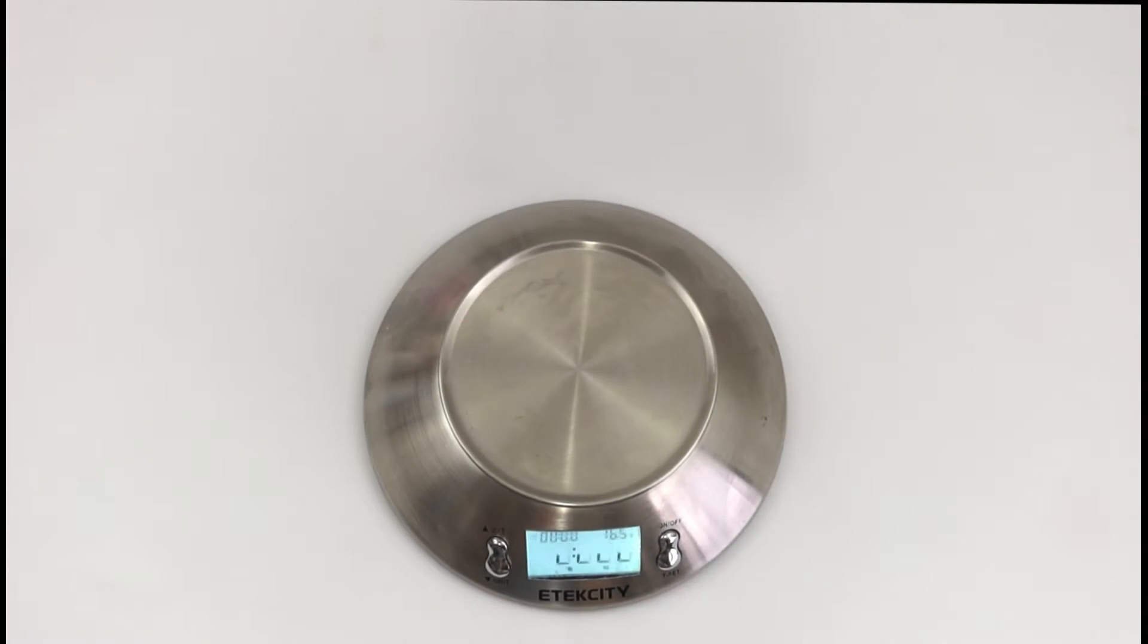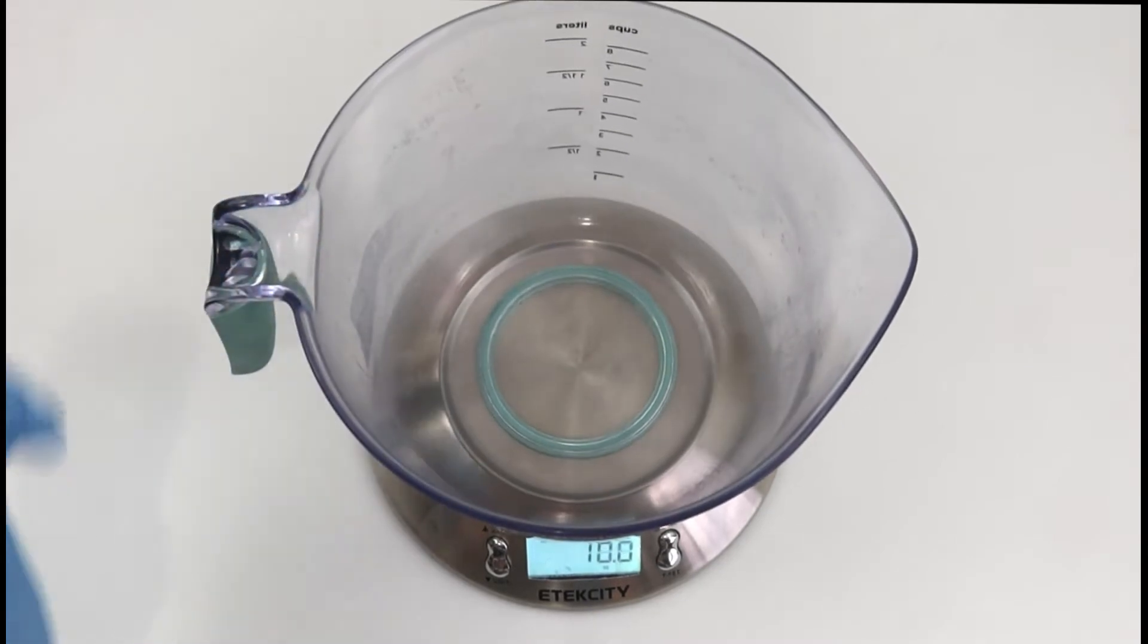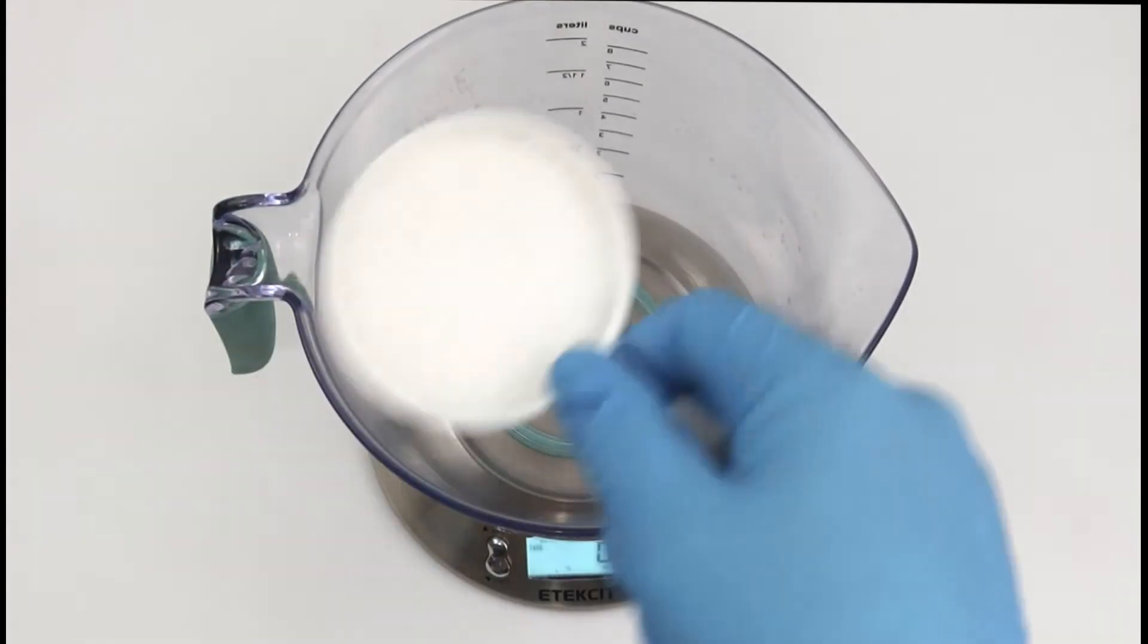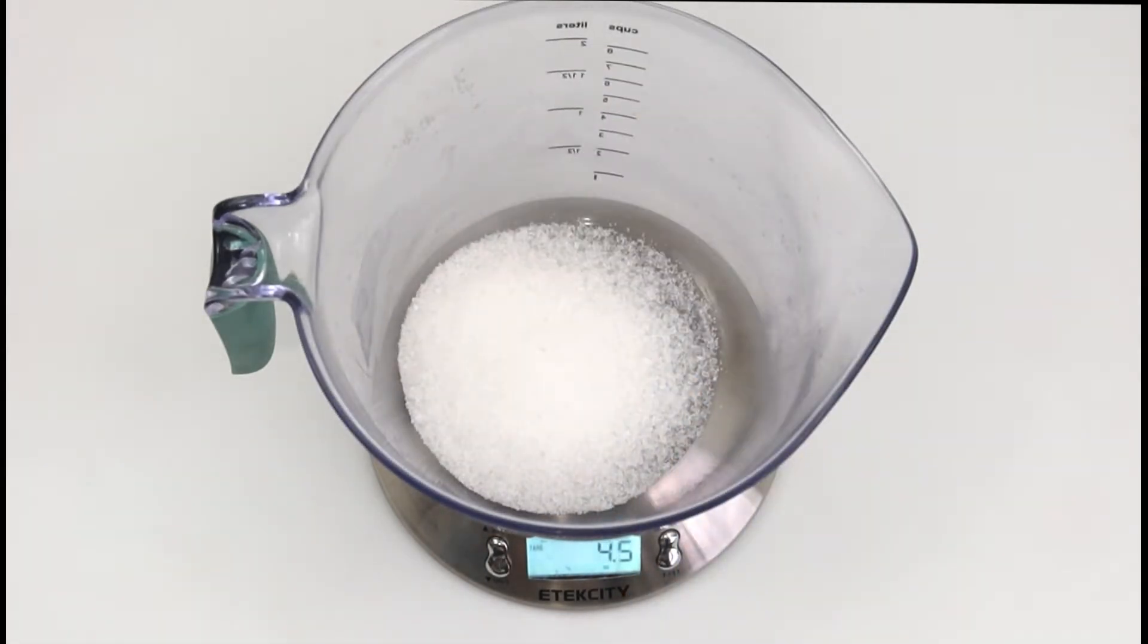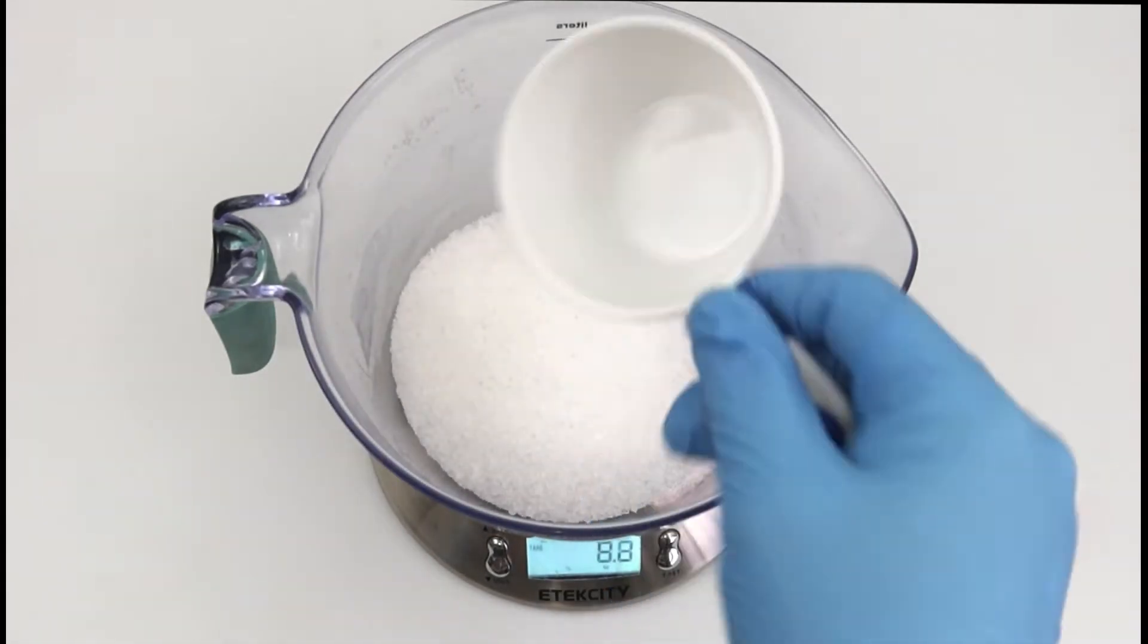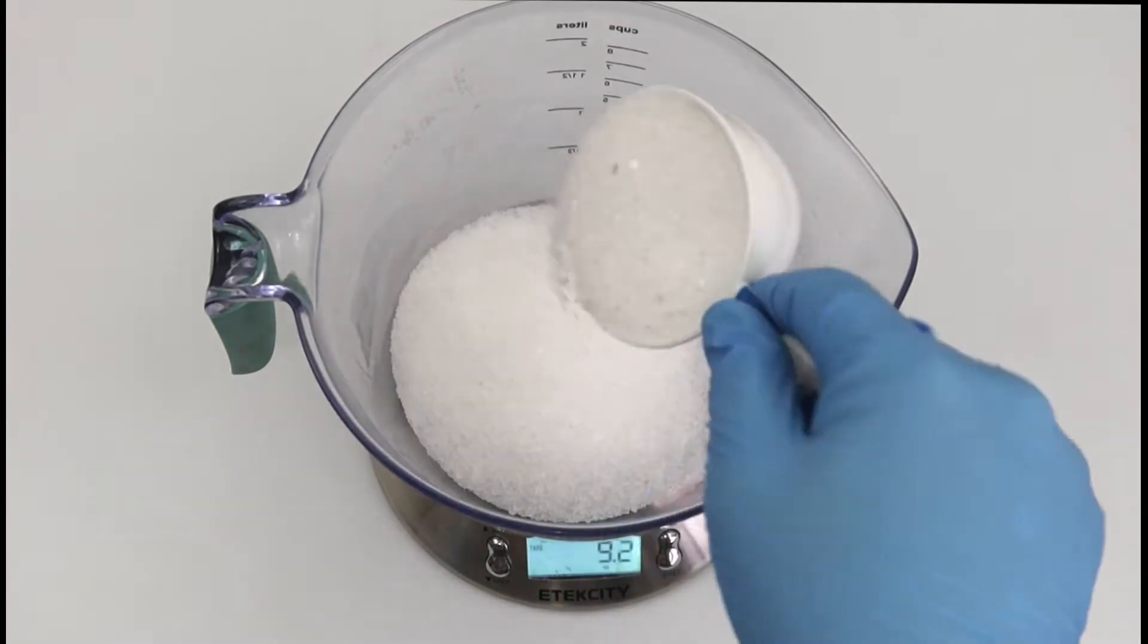Alright, so we are going to begin by measuring out our three ingredients. We have Dead Sea Salt, Epsom Salt, and Baking Soda. So we're going to put our scale on the flat surface, place the pitcher or bowl on it, tear it out to zero, and we're going to measure out our two cups of Epsom Salt.